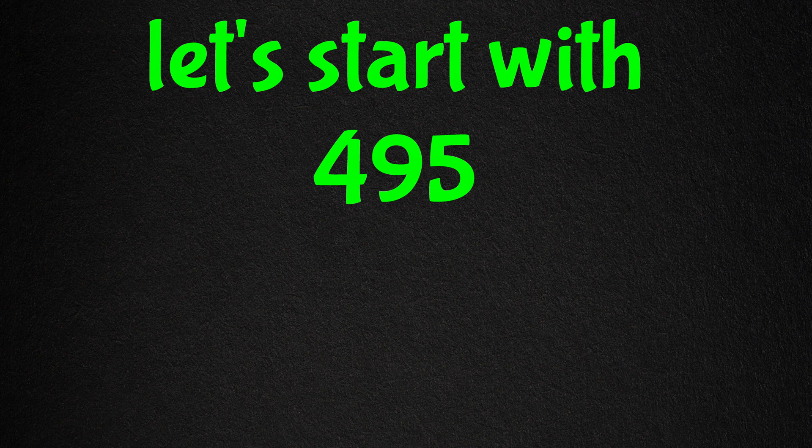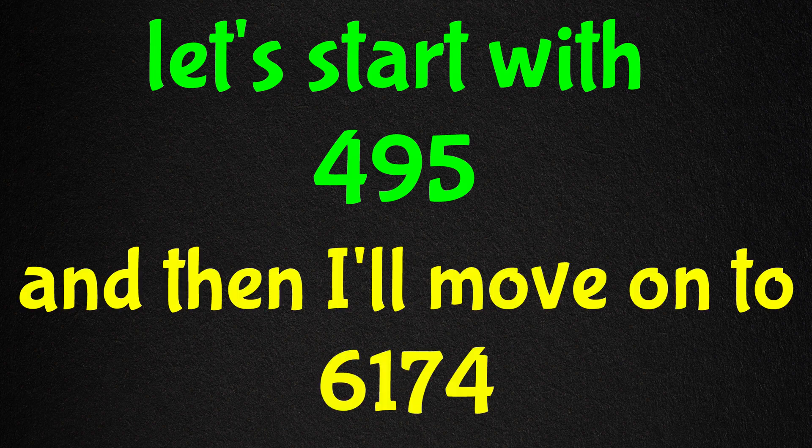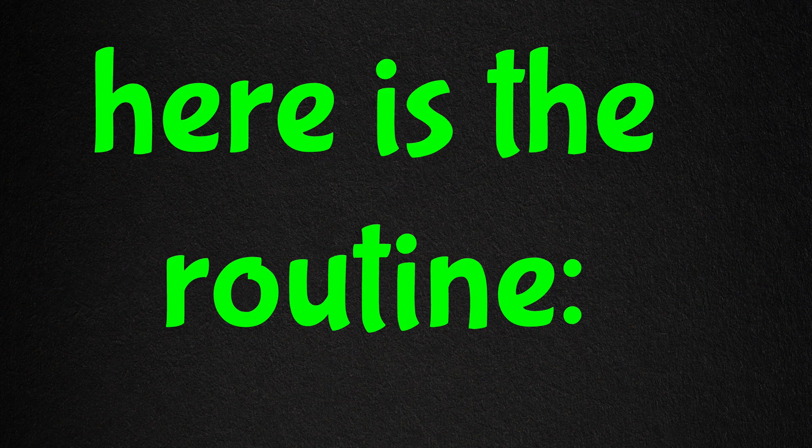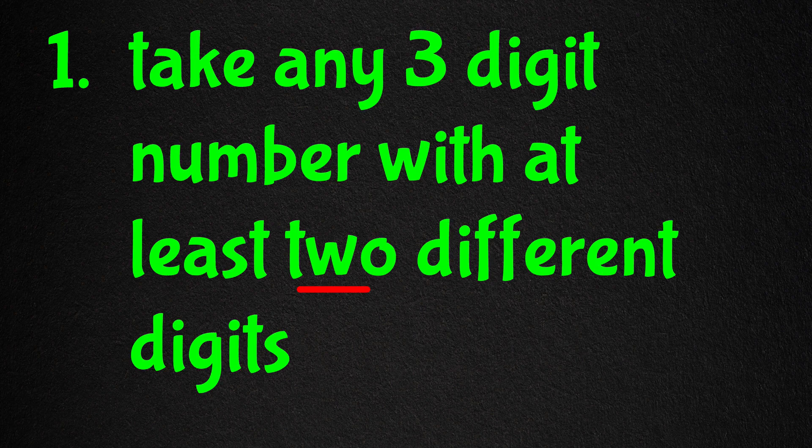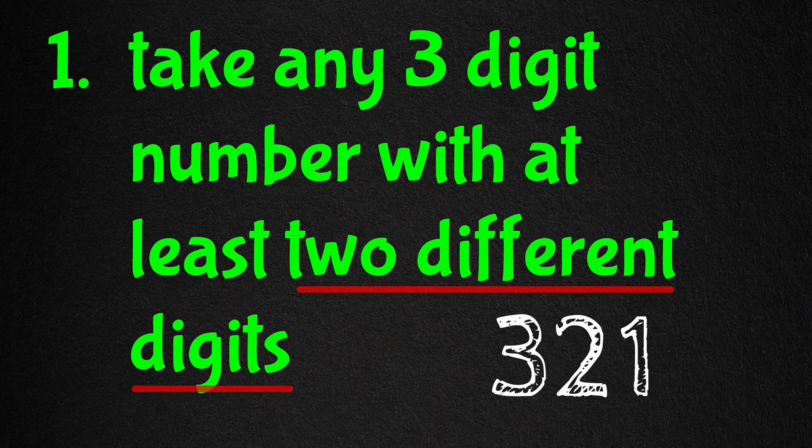Let's start with 495 and then I'll move on to 6174. Here's the routine. First, take any three-digit number with at least two different digits. So let's start with the number 321, a three-digit number with all different digits.